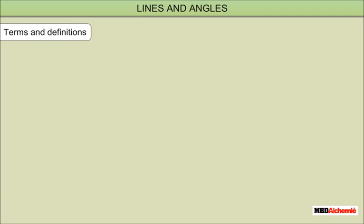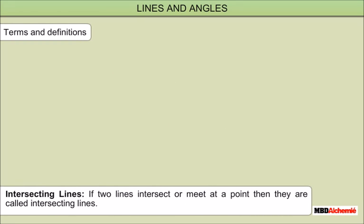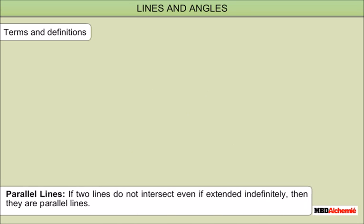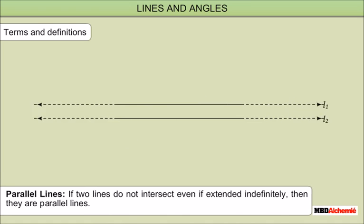Intersecting Lines: If two lines intersect or meet at a point, then they are called Intersecting Lines. For example, lines L and M are Intersecting Lines. Parallel Lines: If two lines do not intersect even if extended indefinitely, then they are Parallel Lines. For example, L1 and L2 are Parallel Lines.